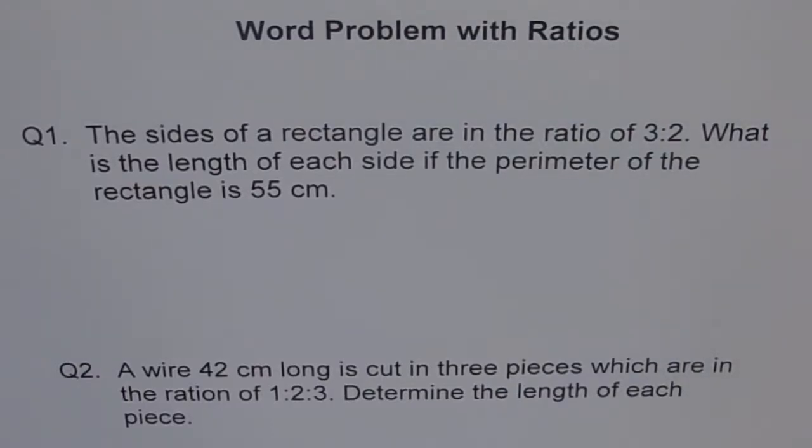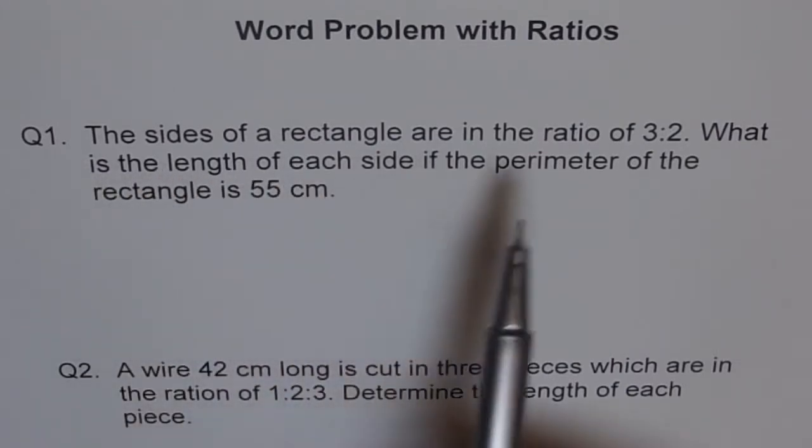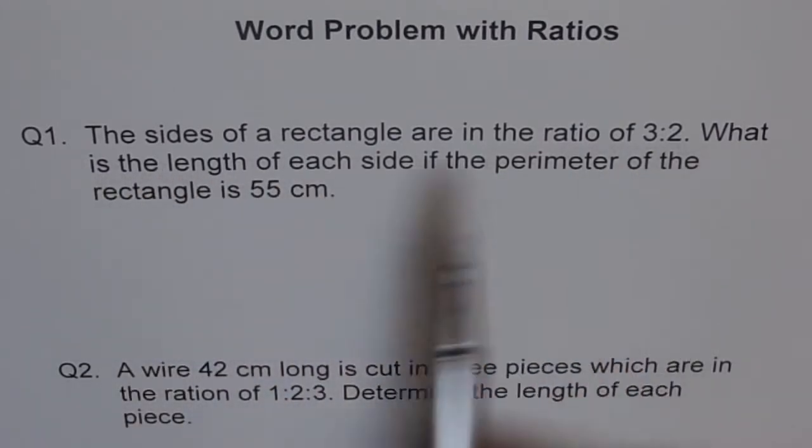Here are word problems with ratios, and we will use the knowledge of our linear systems to solve them. Question number one: The sides of a rectangle are in the ratio of 3 to 2. What is the length of each side if the perimeter of the rectangle is 55?